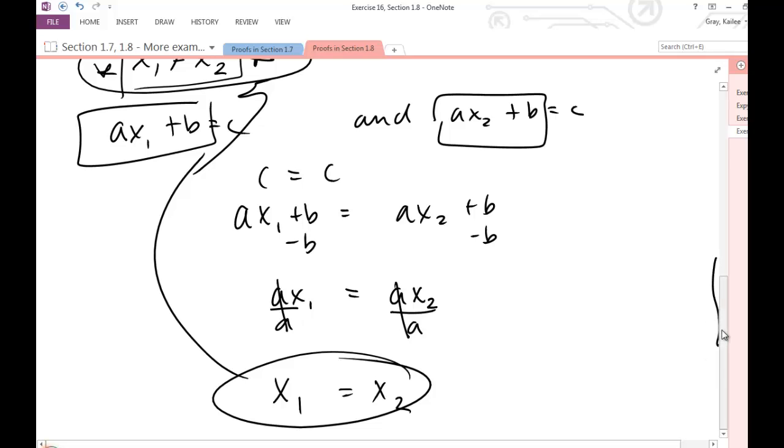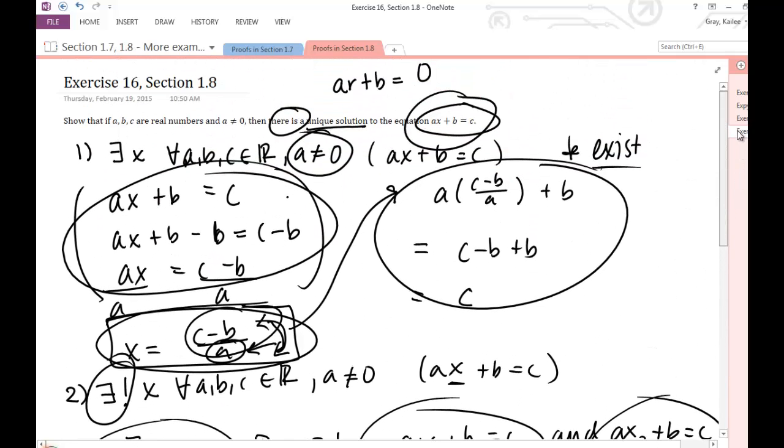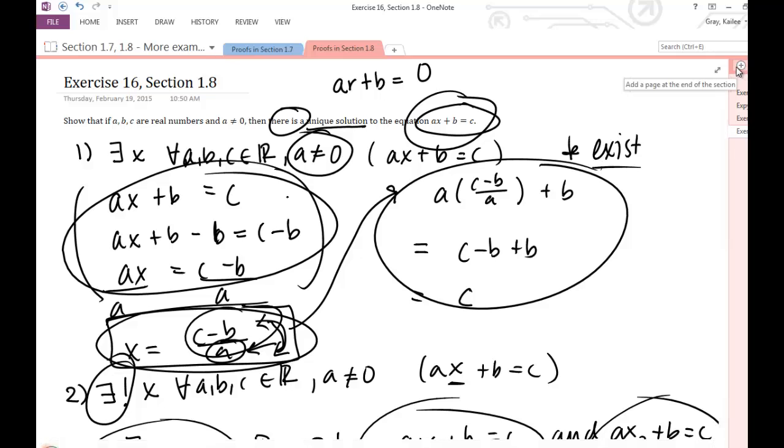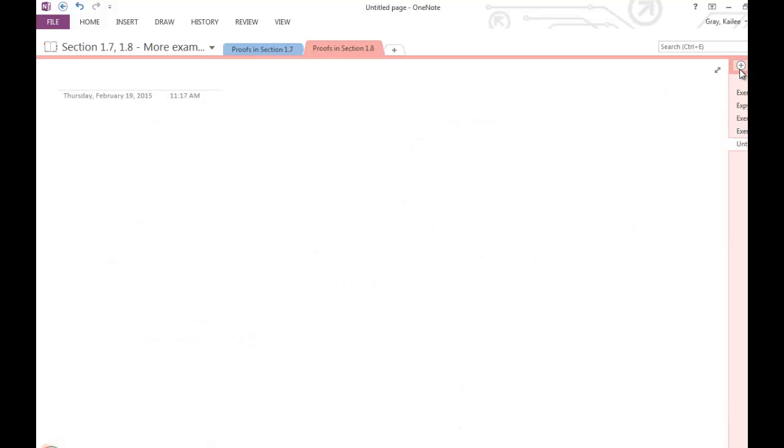So we've shown that the solution exists and that it satisfies that equation, and we'll have shown that it's unique by the second portion. So let's write it up pretty and take our sketch to the next level here. I'm going to let my reader know that I'm starting my proof, and for my final draft here you want to pay attention to this portion.